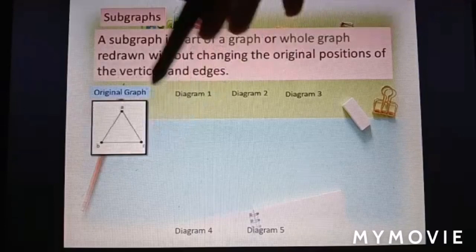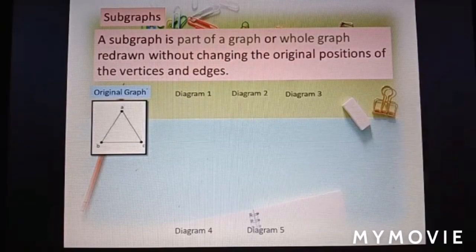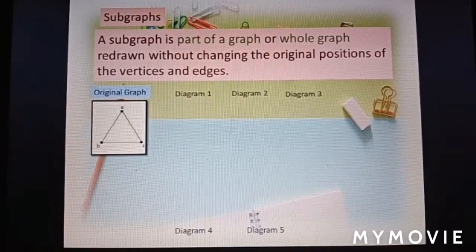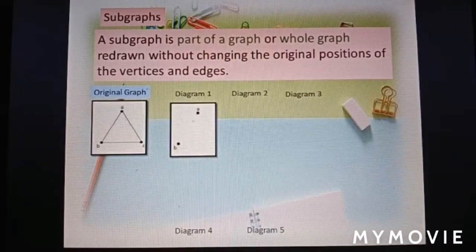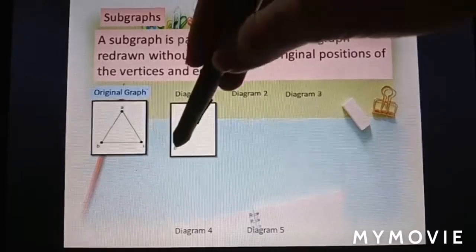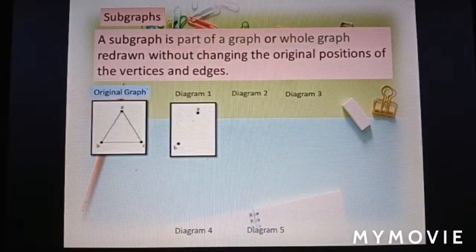This is the original graph. Diagram 1 to find a subgraph of the original graph. The first one, the vertex AB, is one part of the original graph.